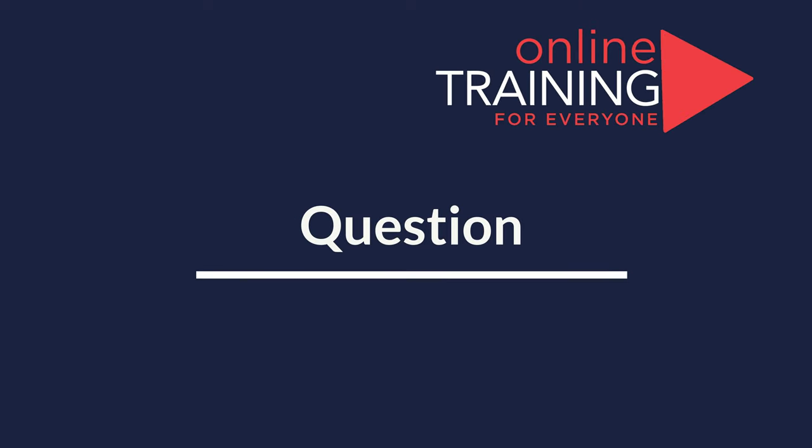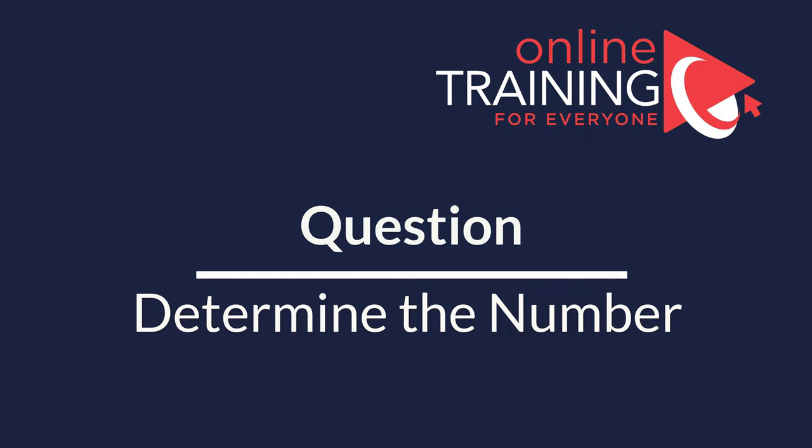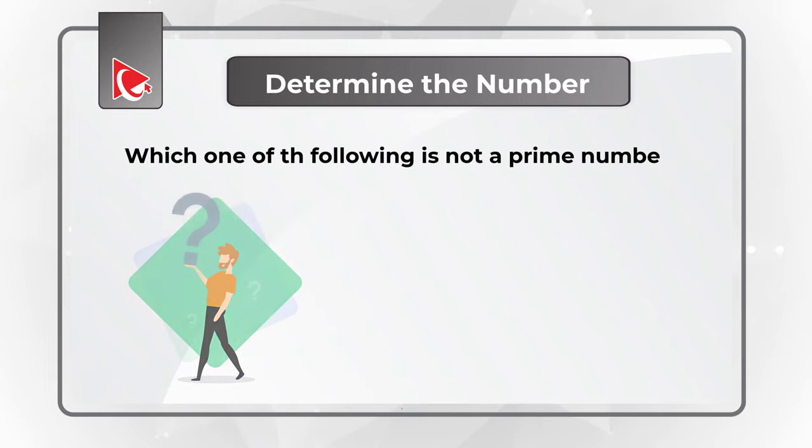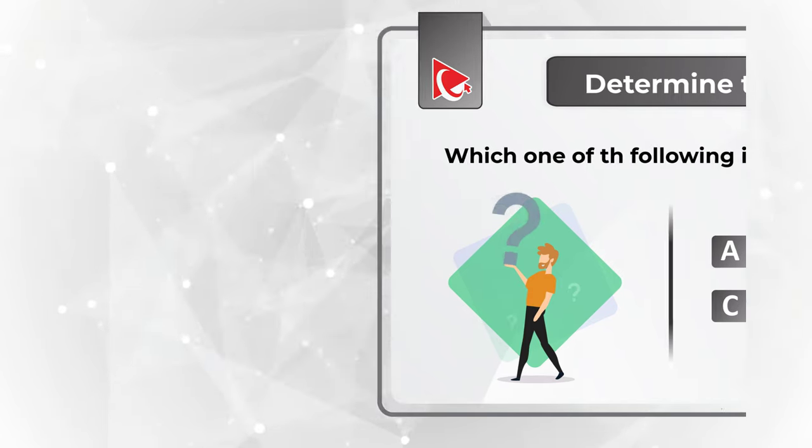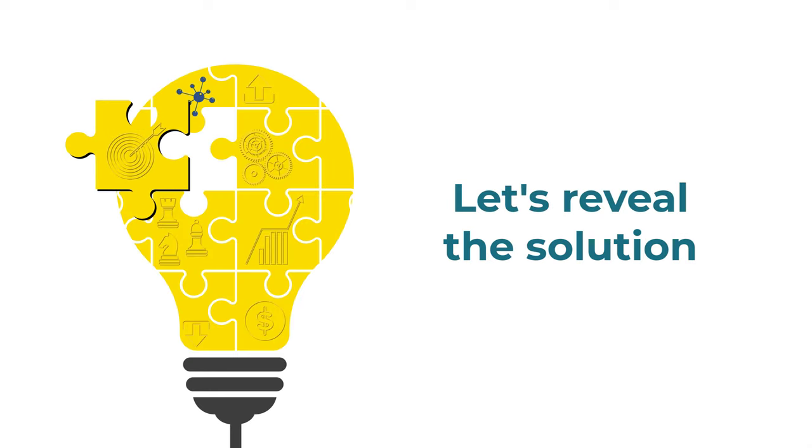Here is an interesting question where you're presented with a set of numbers. And you need to determine which number is not a prime number. You have four different choices. Choice A, 31. Choice B, 61. Choice C, 71. And choice D, 91. Give yourself a little bit of time. Maybe recall the definition of prime numbers and see if you can come up with the solution.